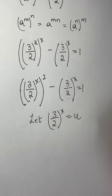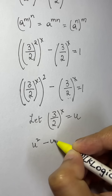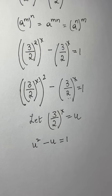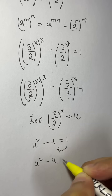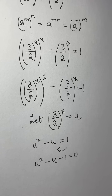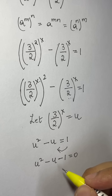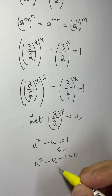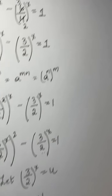When we substitute u for (3/2)^x, we get u squared minus u equals 1. Bringing 1 to the left side gives u squared minus u minus 1 equals 0. We now have a quadratic equation and will find the solutions using the quadratic formula.